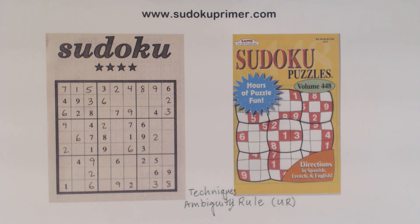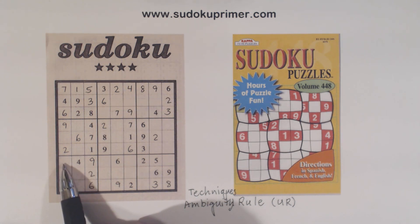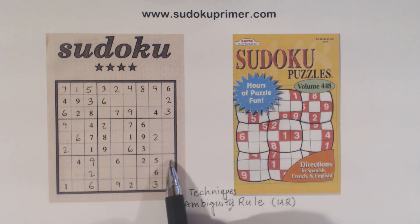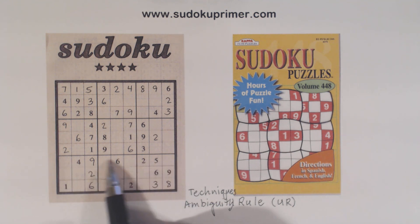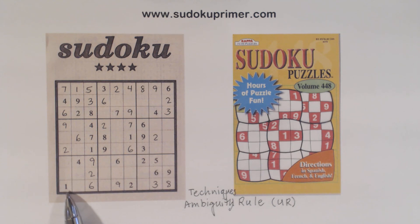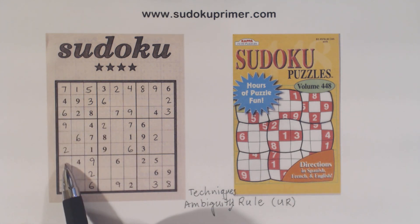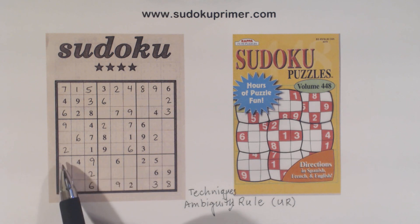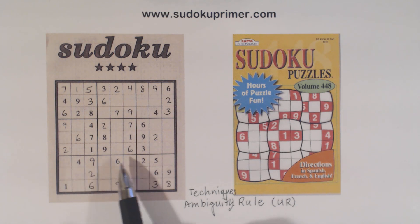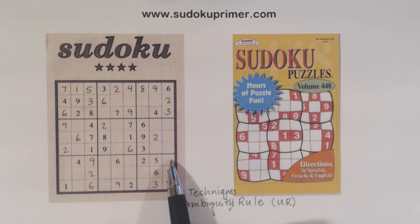First of all, let me show you a set of twins that I found. This row is missing 1, 3, 7, and 8. There's a 1 here and a 7 there, so that's a 3 or an 8. There's a 1 and a 7 there, so that's a 3 or an 8. So we have 3-8 twins and 1-7 twins. That's the first thing I noticed.